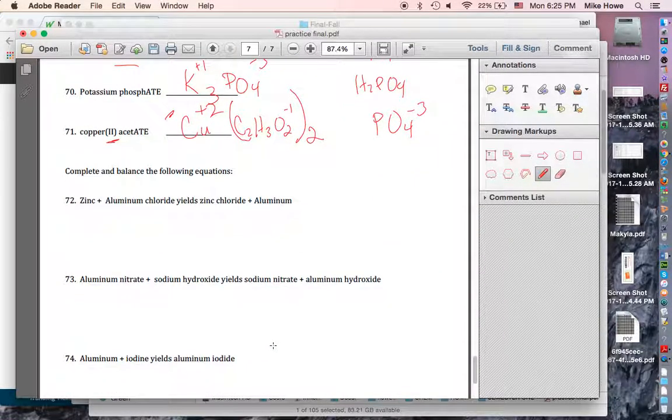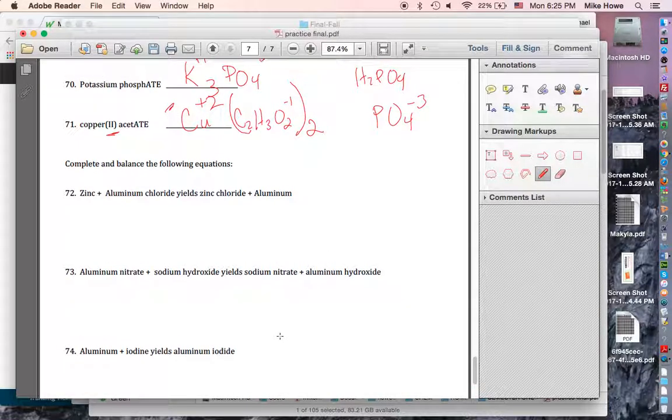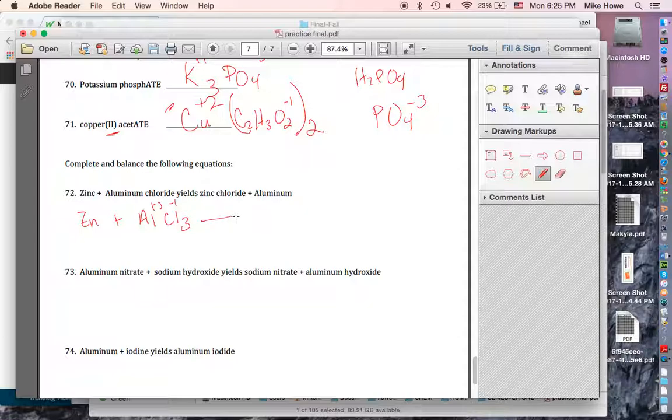Down here, this is a balancing equation section. We didn't quite get there this year, but we do know how to write the formula. So we're going to go ahead and do that. So we'd have zinc plus aluminum chloride. So you'd have Al and Cl. That's +3. That's -1. So it'd be AlCl3. Yield is an arrow. Zn and Cl, that's +2. That's -1. So you're going to put a 2 down here. And aluminum is just Al.